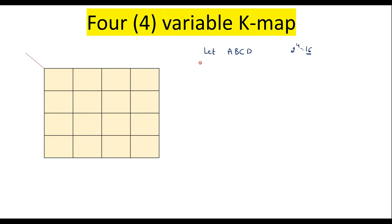The Kmap looks like this. We write 2 variables here and 2 variables here — we can write A, B here and C, D here. It doesn't make any difference. In a 4-variable Kmap we have 4 rows and 4 columns.